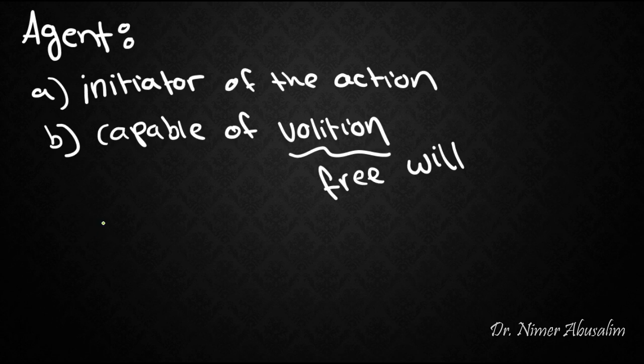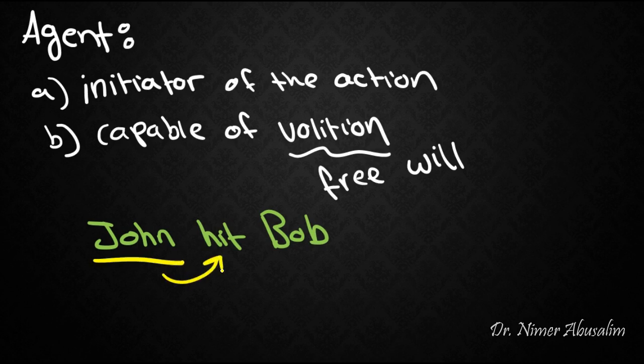The agent can make the choice to do something. An example of an agent role would be John in 'John hit Bob.' John is the initiator of the action hit, and John also can initiate this action with volition, therefore John receives the agent thematic relation.